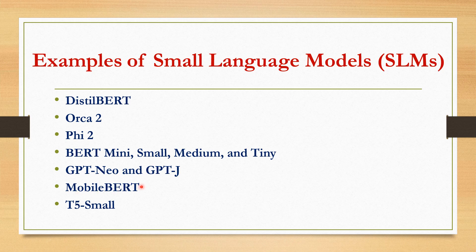Next is MobileBERT, tailored for mobile devices and specifically designed to optimize performance within the constraints of mobile computing. Next is T5 Small — part of Google's Text-to-Text Transfer Transformer series, the T5 model strikes a balance between performance and resource utilization, aiming to provide efficient text processing capabilities.